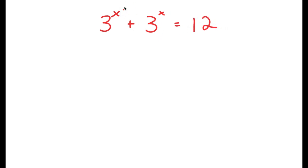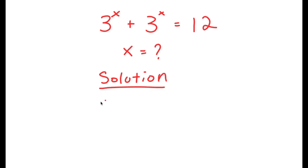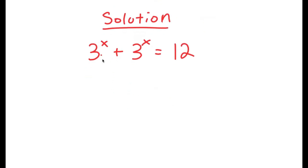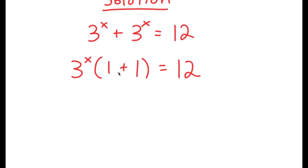My only variable in this equation is x, so that's the variable I'm going to be solving for. I have 3 to the power of x plus 3 to the power of x is equal to 12. What I'm first going to do is factor out 3 to the power of x. So I get 3 to the power of x times 1 plus 1 is equal to 12. Now, 1 plus 1 is 2, so I get 3 to the power of x times 2 is equal to 12.